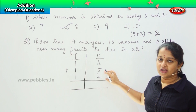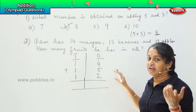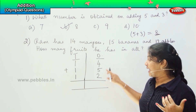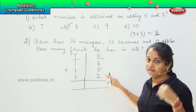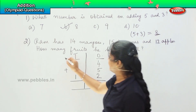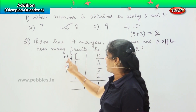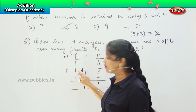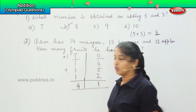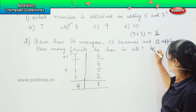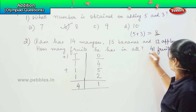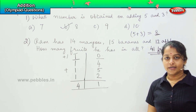So, 4 plus 5: 4 in the mind, 5 on the fingers — after 4: 5, 6, 7, 8, 9. Then 9 in the mind, 2 on the fingers — after 9: 10 and 11. So, 1 here I will carry forward. Then 1 plus 1 is 2, 2 plus 1 is 3, 3 plus 1 is 4. So, my answer is 41 fruits. Got it? Are you clear, children?